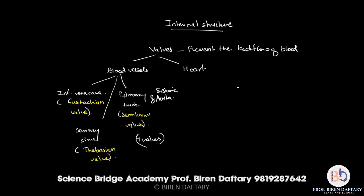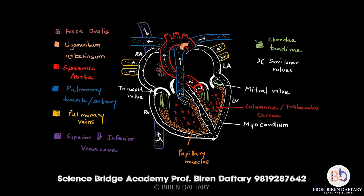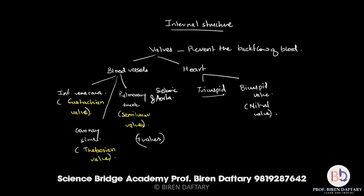Now let us study the valves of the heart itself. There are two main valves: the tricuspid valve and the bicuspid valve. The bicuspid valve is also called the mitral valve. The tricuspid valve is present between the right atrium and right ventricle, and the bicuspid valve is present between the left atrium and left ventricle.